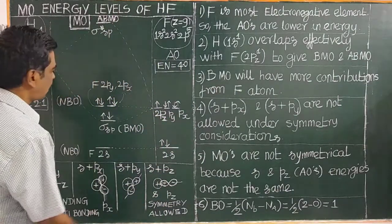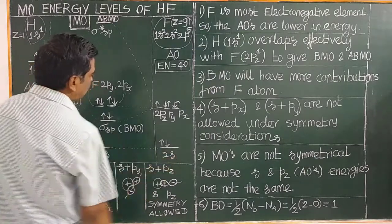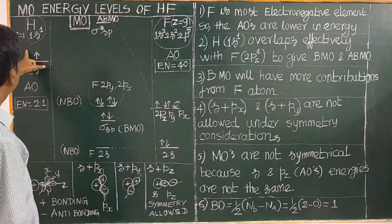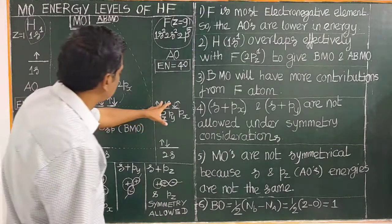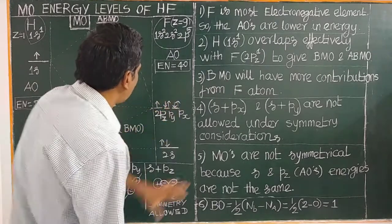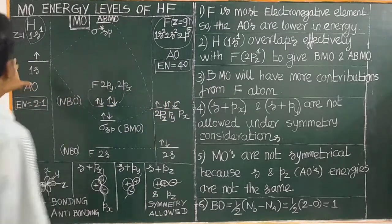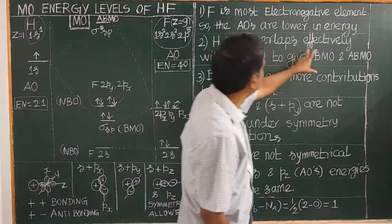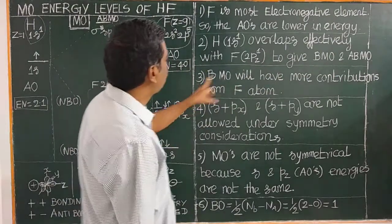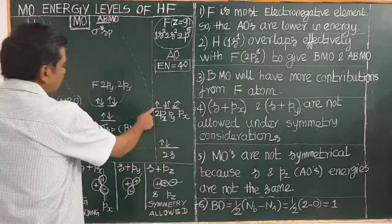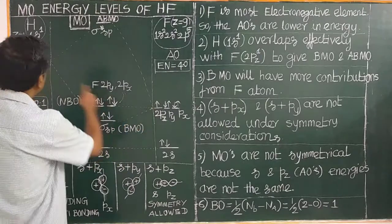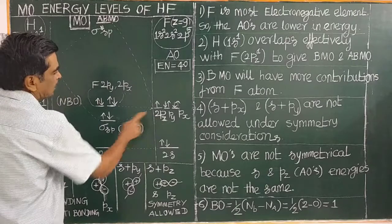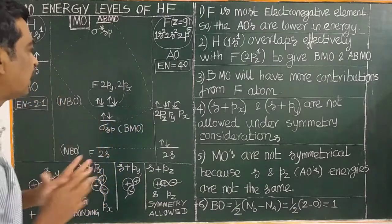You can see the unpaired electron in the 2pz orbital. If you look at the 1s orbital of hydrogen, it has one unpaired electron. The 2pz orbital of fluorine also has one unpaired electron, and the 1s orbital of hydrogen effectively overlaps with this 2pz orbital.